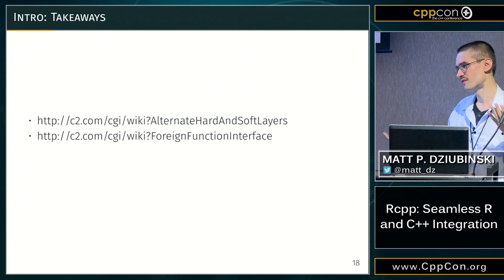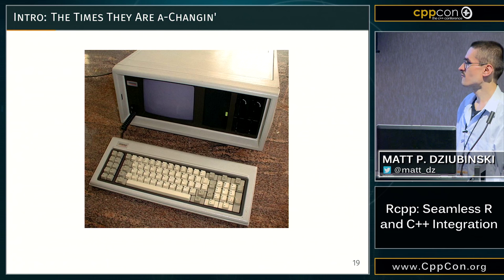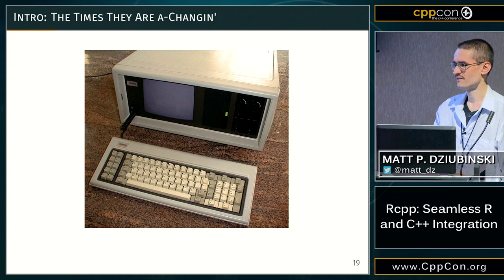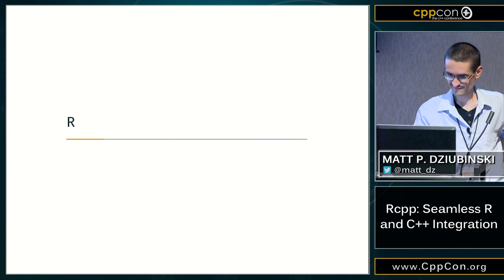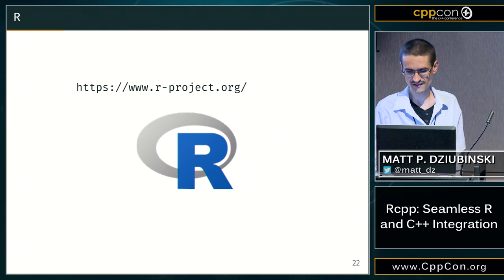PC compatibles came along and became popular. Many people have them — not that many have Atari anymore. So let's talk about R. R is awesome — that's disclaimer number zero. It's a great programming language. It's an environment for statistical computing and graphics, similar to S, which was developed at Bell Labs. Many pretty nice languages have been developed at Bell Labs.